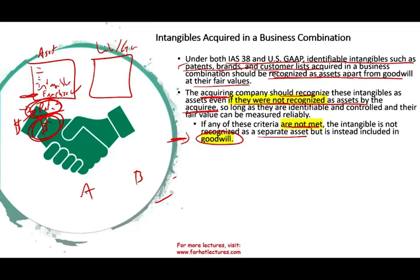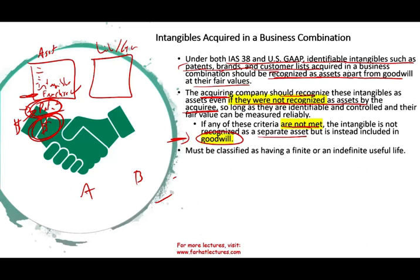We'll talk about goodwill in the next session. If you're interested in goodwill, go to my intermediate accounting — I have many lectures about goodwill from a US perspective. The intangible asset must also be classified as having a finite or indefinite life.